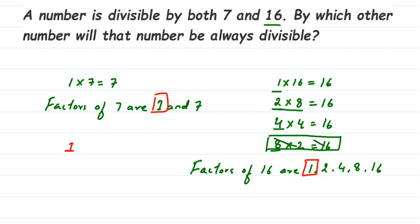From here we conclude that the common factor of 7 and 16 is 1. Therefore, 1 is the common factor or common number which divides both 7 and 16. I hope this question is clear. If you have any questions or doubts, you can drop a comment. Thank you so much for watching.